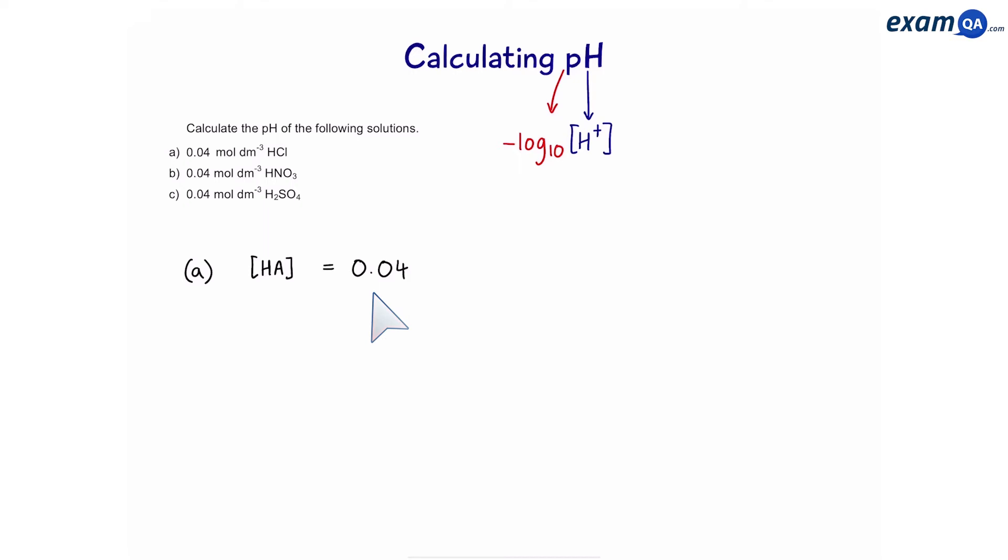hydrochloric acid is a monoprotic acid. That means the concentration of hydrogen ions will be the same, 0.04. So, to work out pH, we're going to do minus log of the concentration of hydrogen ions, which is 0.04. And that gives us an answer of 1.4.